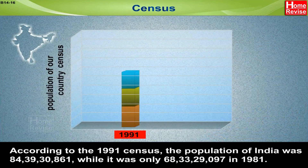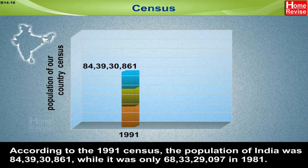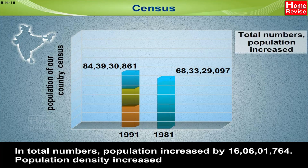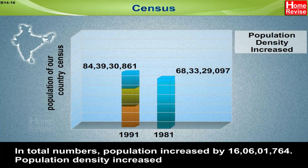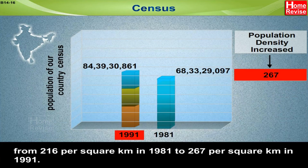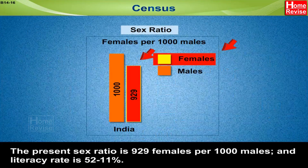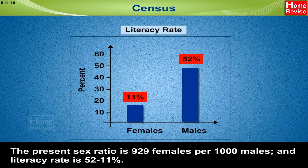Similarly, a death certificate is a must for solving property disputes, pension, and other related matters. According to the 1991 census, the population of India was 84 crores 39 lakhs 30,861, while it was only 68 crores 33 lakhs 29,097 in 1981. Population increased by 16 crores 6 lakhs 1,764. Population density increased from 216 per square kilometer in 1981 to 267 in 1991. The present sex ratio is 929 females per 1,000 males and literacy rate is 52.11 percent.